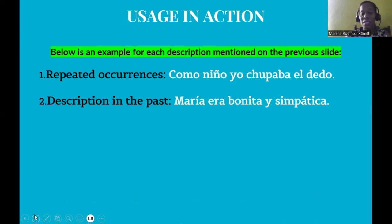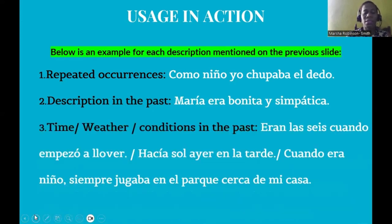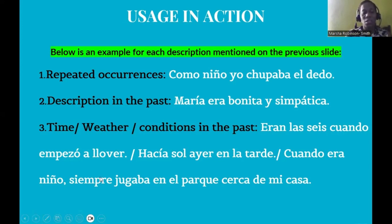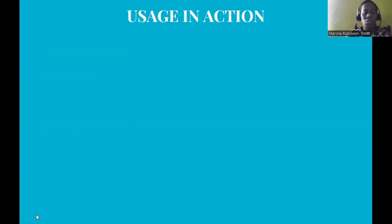Another usage is description in the past — for example: 'María era bonita y simpática.' And for time, weather, or conditions in the past: 'Eran las seis cuando empezó a llover,' 'Hacía sol ayer en la tarde,' 'Cuando era niño, siempre jugaba en el parque cerca de mi casa.' Once you're talking about the time or weather in the past, the imperfect tense is required.